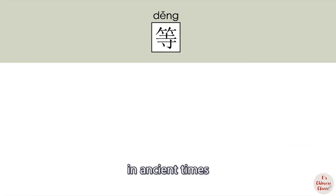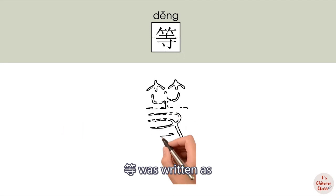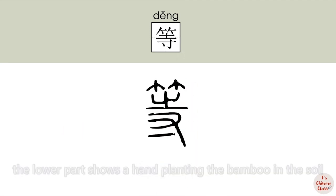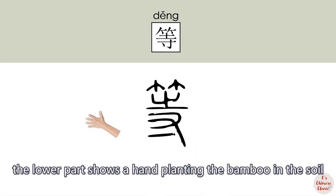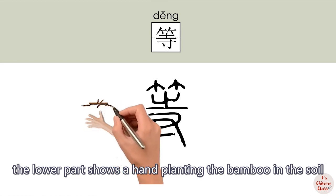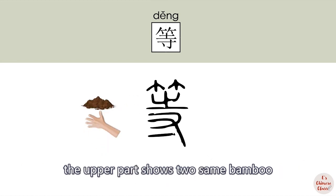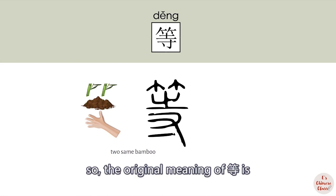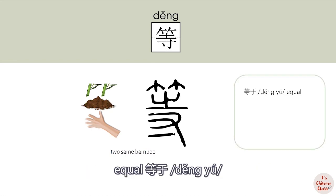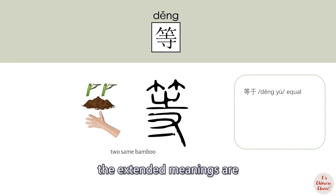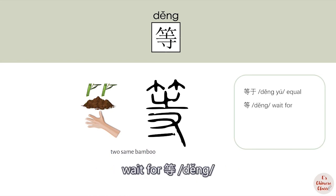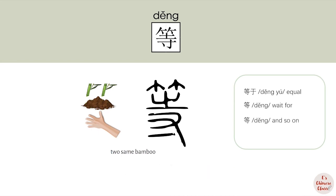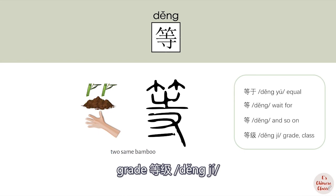In ancient times, 等 was written with the lower part showing a hand planting bamboo in the soil, and the upper part showing two identical bamboo. So the original meaning of 等 is equal (等于). The extended meanings are: wait for (等), and so on (等), and grade (等级).